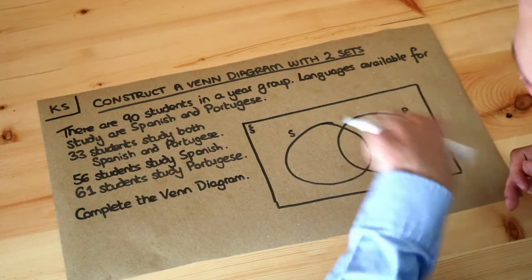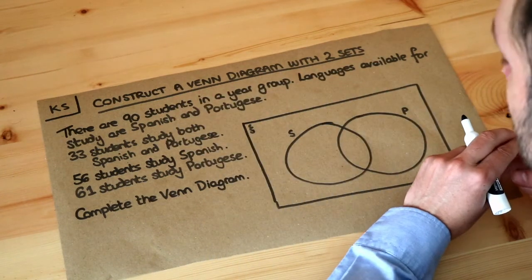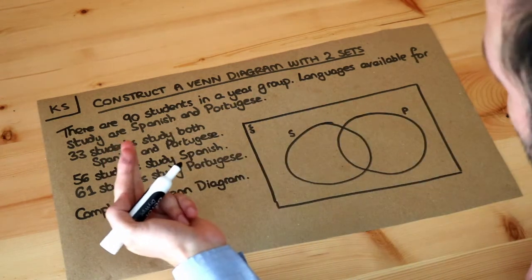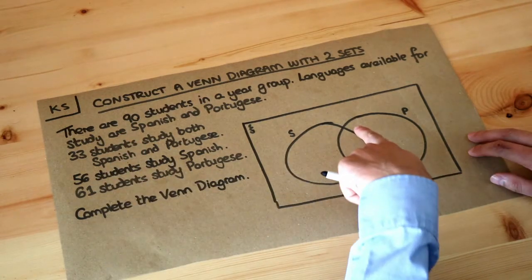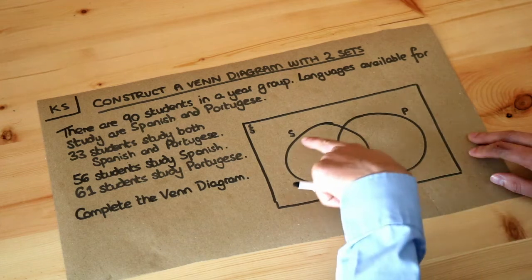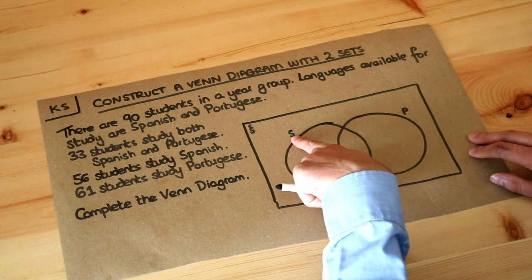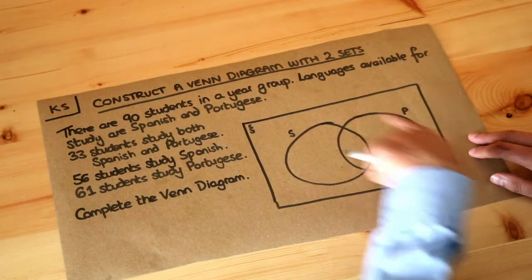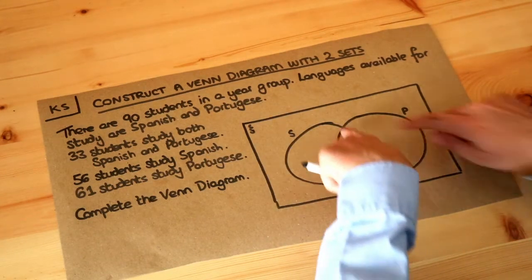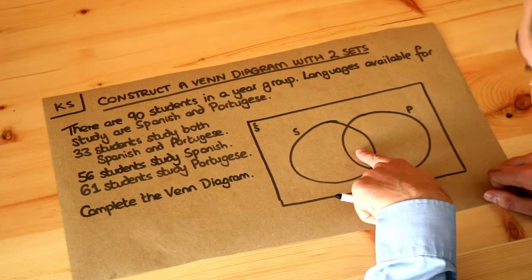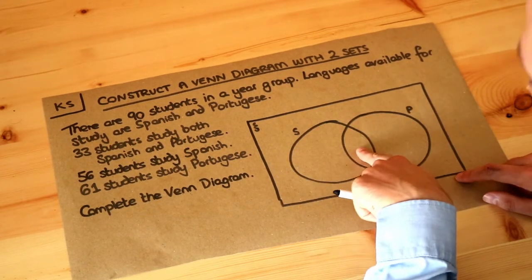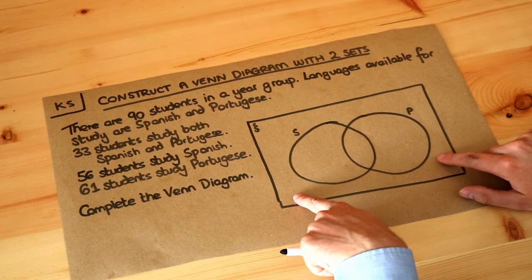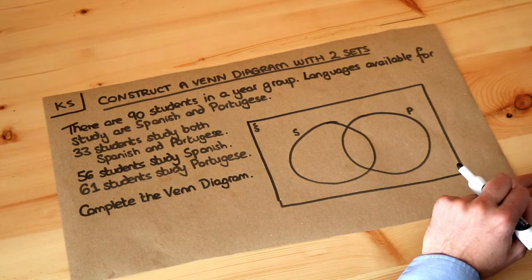A set might also be a collection of students who study Portuguese, and collections can overlap. For example, some students could study both Spanish and Portuguese. In the Venn diagram we use circles to represent each set: one circle represents all students who study Spanish (S), another represents students who study Portuguese (P), and where the two circles overlap, those people study both languages. Those outside both circles study neither.